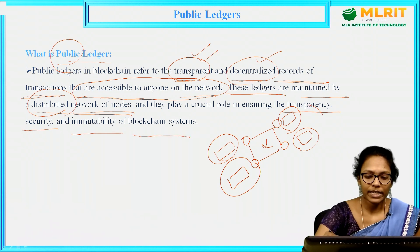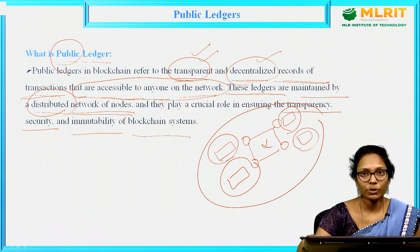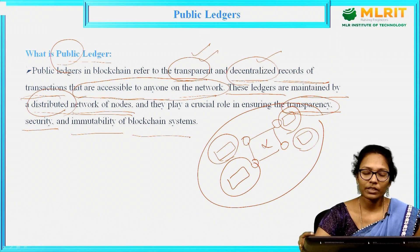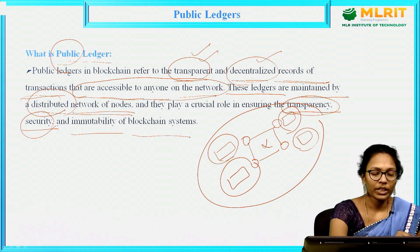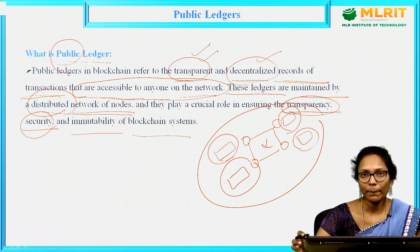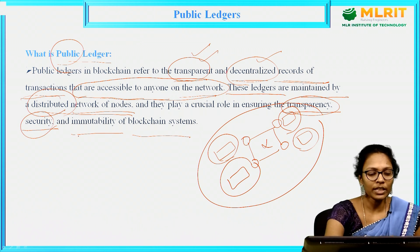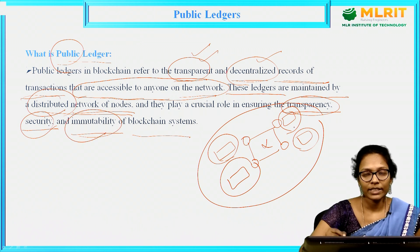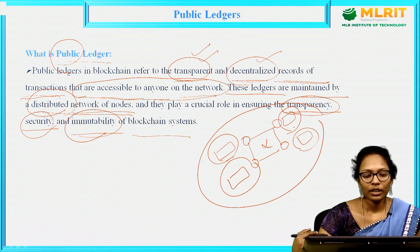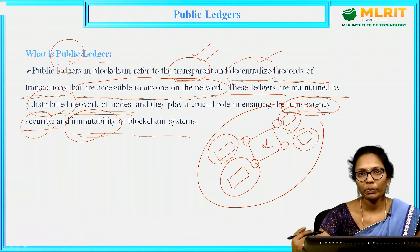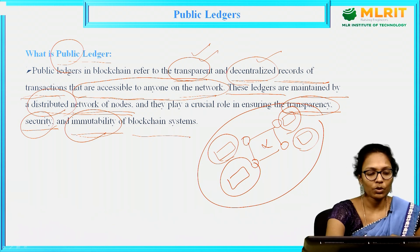By maintaining public ledgers, you attain transparency — everyone can access it and see the content. And security — we know no one can modify the content of the blockchain, as blockchains are immutable. All these transactions which you are storing on the blockchain are immutable, meaning once you deploy a transaction onto the blockchain, it cannot be modified later. That feature is called immutable, and because of this feature you can provide security.